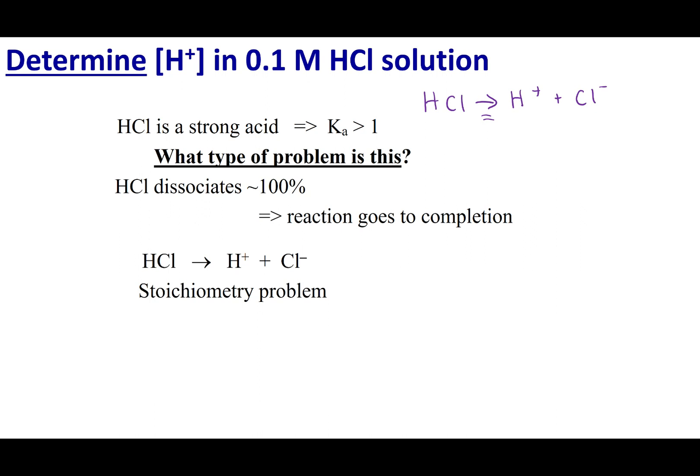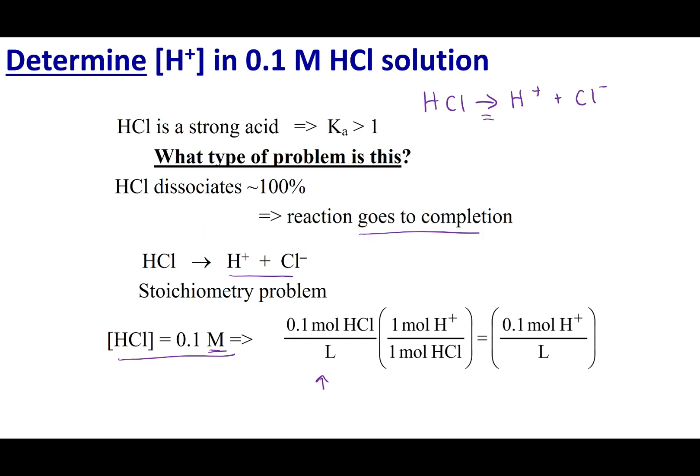So I'm going to go back to Chem 1A and set this up as a simple stoichiometry problem using mole ratios. I have 0.1 molar HCl. Remember what molarity means - I have 0.1 moles of HCl per liter. If I look at this dissociation reaction and see that it goes to completion, for every one mole of HCl, I'll have one mole of H-plus. You can see that HCl and H-plus are in a one-to-one ratio.